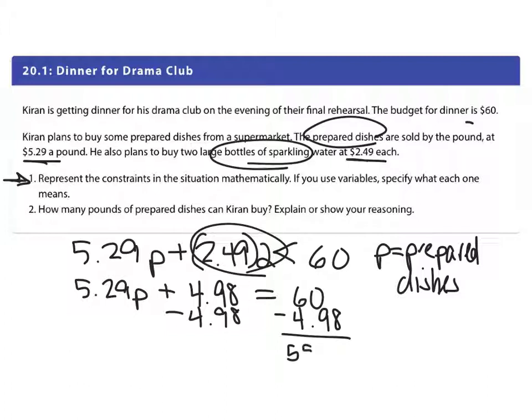$55.02. 5.29P, so divide both sides by 5.29. Let's see calculator, 5.29. My answer is 10.4 and some change.